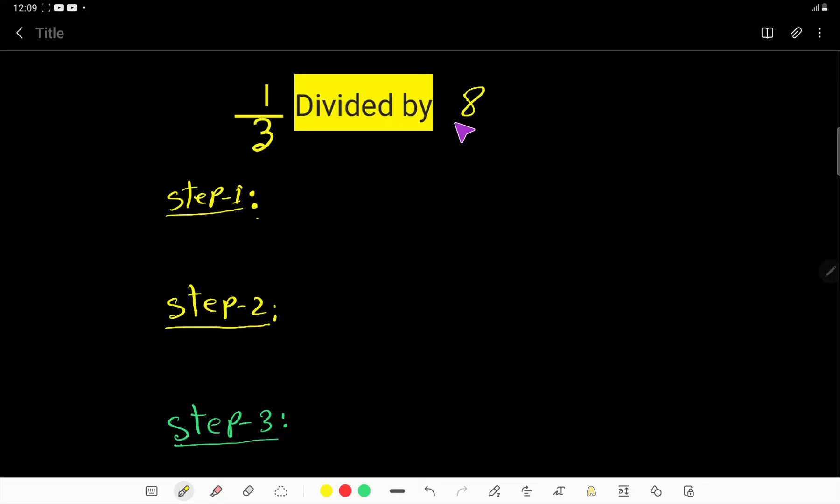1 over 3 divided by 8. So in the first step, I have to translate this expression. Divided by means this division sign.